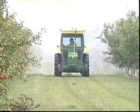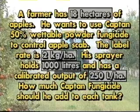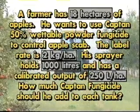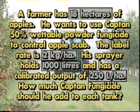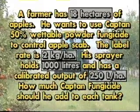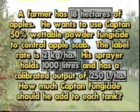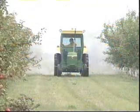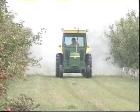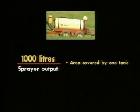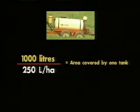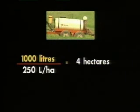Let's work through an example. A farmer has 18 hectares of apples. He wants to use Captan 50% wettable powder fungicide to control apple scab. The label rate is 2 kilograms per hectare. His sprayer holds 1,000 liters and has a calibrated output of 250 liters per hectare. The first step is to calculate the area covered by one tank: 1,000 liters divided by 250 liters per hectare equals 4 hectares.